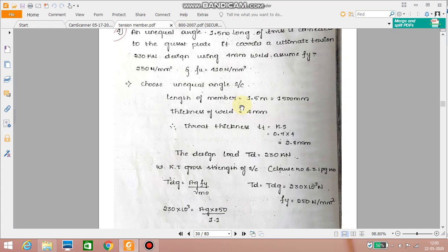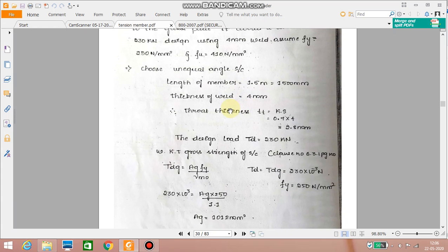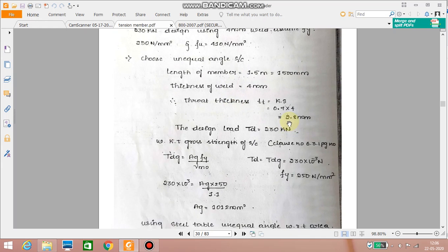The length of the member is 1.5 meter that is equal to 1500 mm. So later we may need to check this slenderness ratio also. So the thickness of the weld is given 4 mm. The throat thickness dt equal to K into S. So it is 0.7 into 4 which is 2.5 mm.